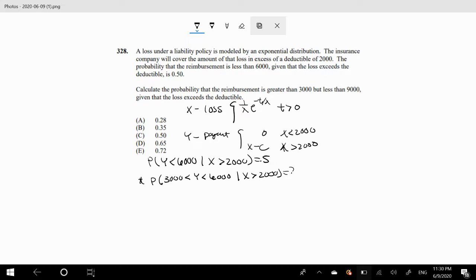That means our CDF for X, we already know that's exponential, so it's just 1 minus e to the negative t over lambda. And we also know that at $6,000 it equals 0.5. So then we can replace this t with $6,000 and solve for lambda, which is what we need.